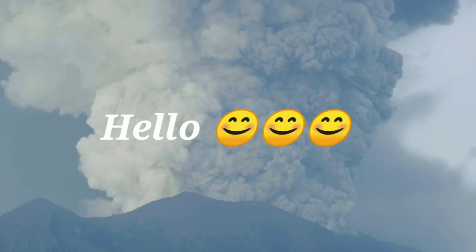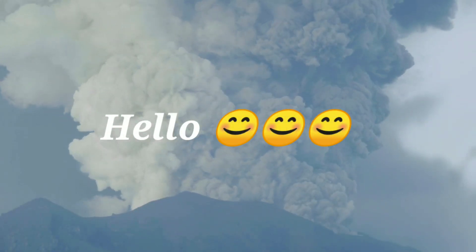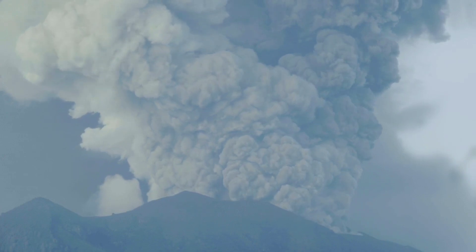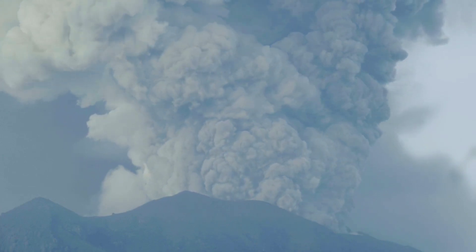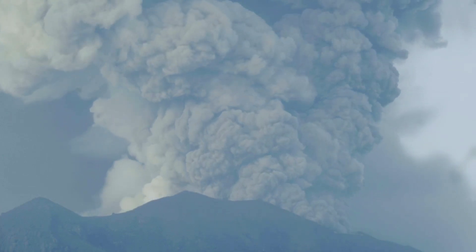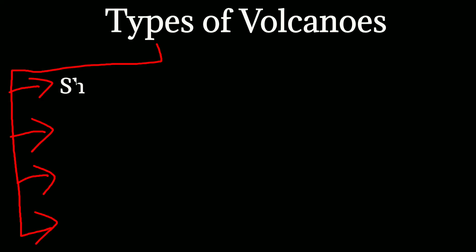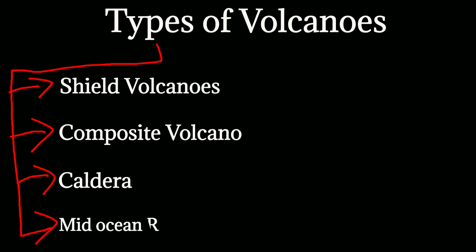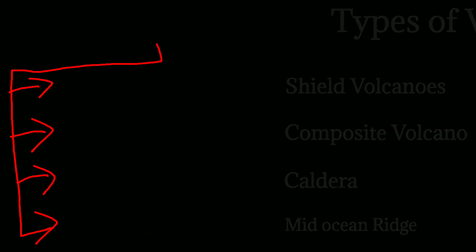Hello and welcome. In this video we'll discuss the main types of volcanoes. The first is the shield volcano, the second is the composite volcano, the third is the caldera, and the last one is the mid-ocean ridge. Let's see all of them in detail.